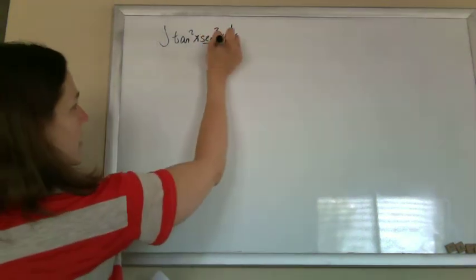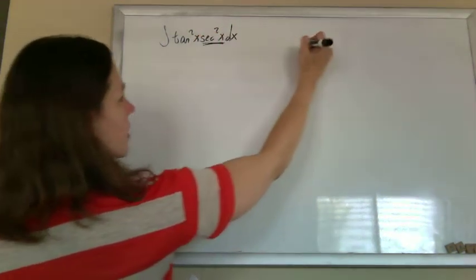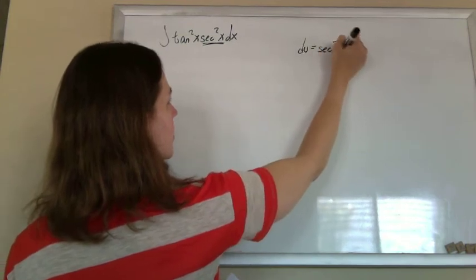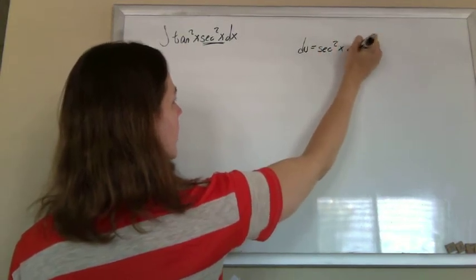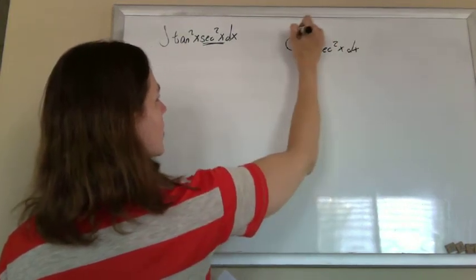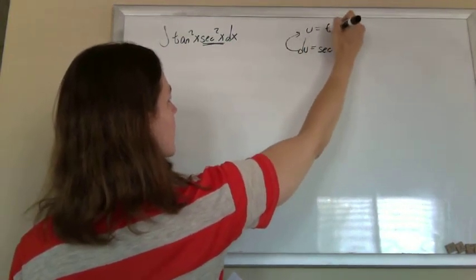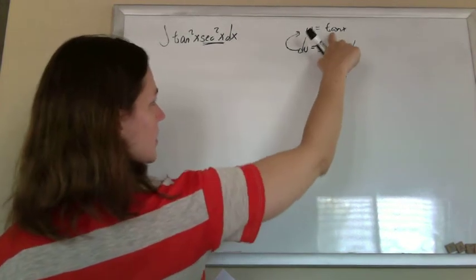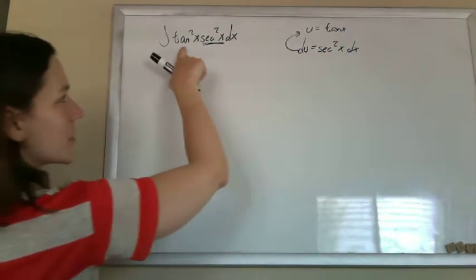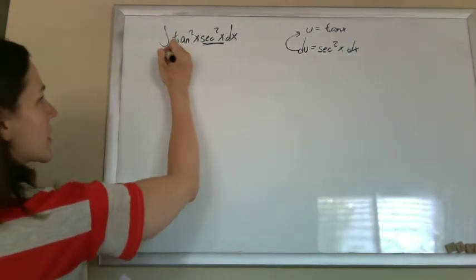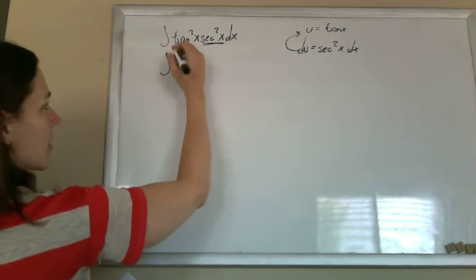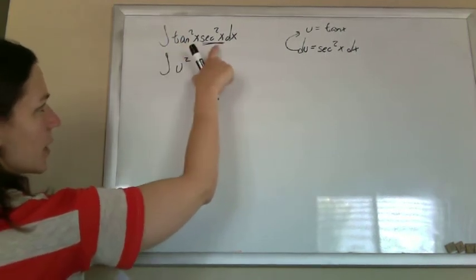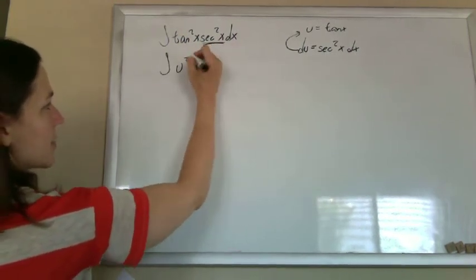I see a secant squared. I'm going to set this aside to be my du for later, which means my u is going to be tangent, because the derivative of tangent is a secant squared. I can write this entire integral in terms of u — that's u squared, and that's my du.